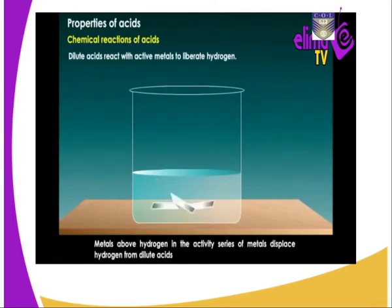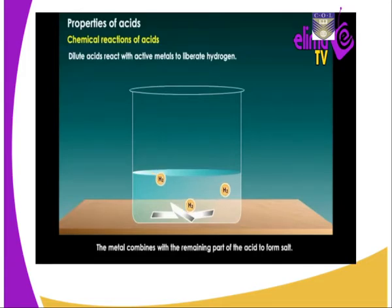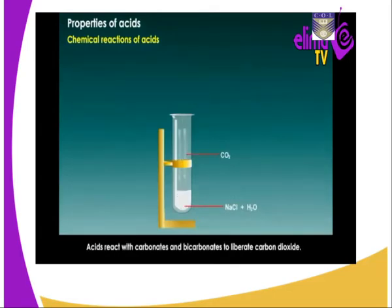Reaction with metals: acids react with metals to produce hydrogen gas and a salt — they liberate hydrogen gas. However, these are not all metals, but metals above hydrogen in the reactivity series. The general reaction is: metal reacts with a dilute acid to give us salt and hydrogen gas. For example, magnesium plus hydrochloric acid gives us magnesium chloride plus hydrogen gas.